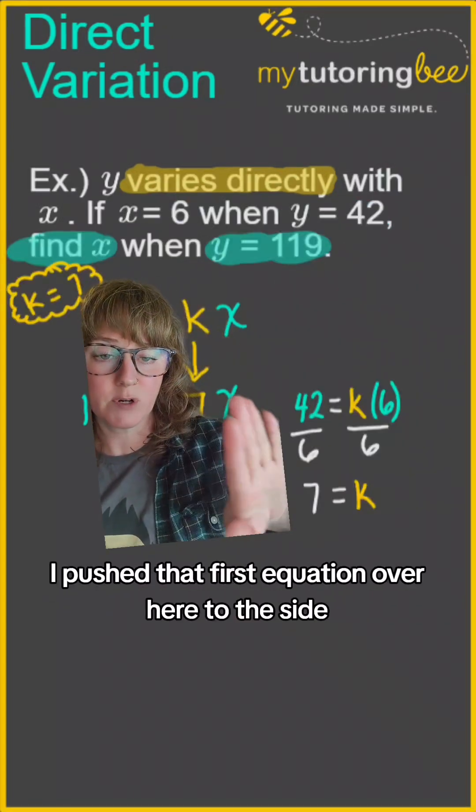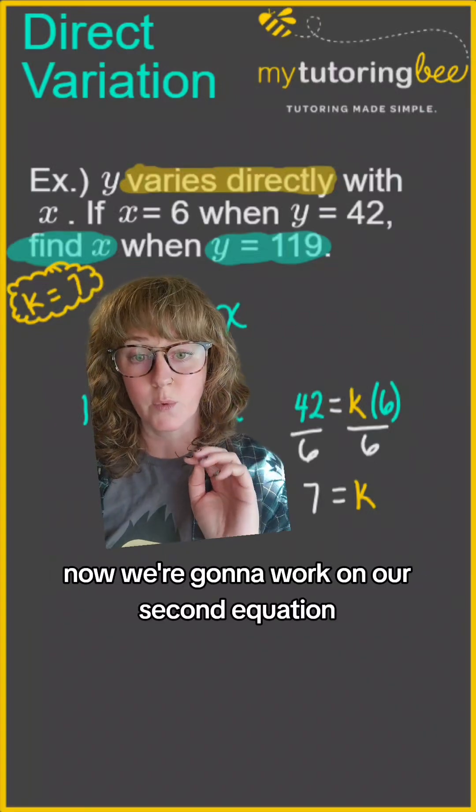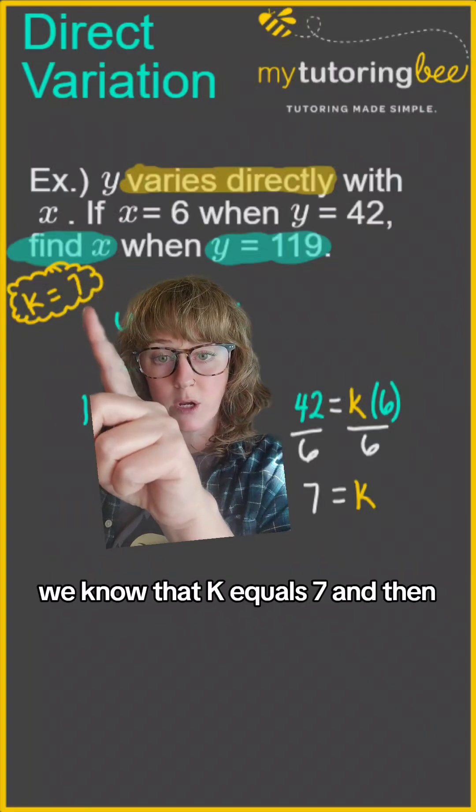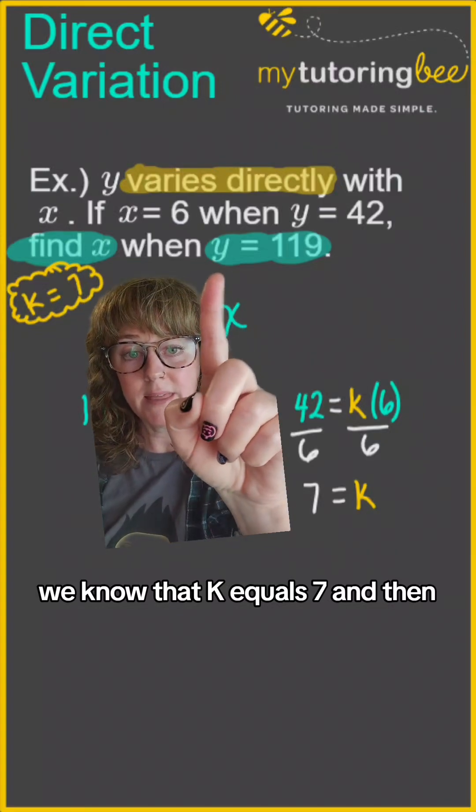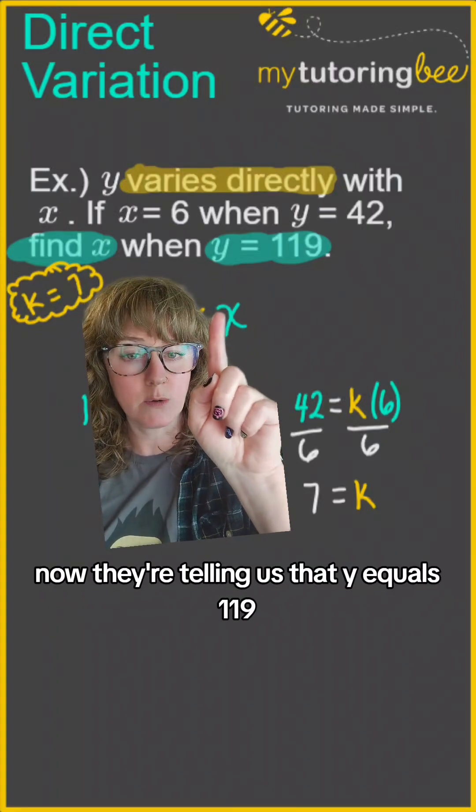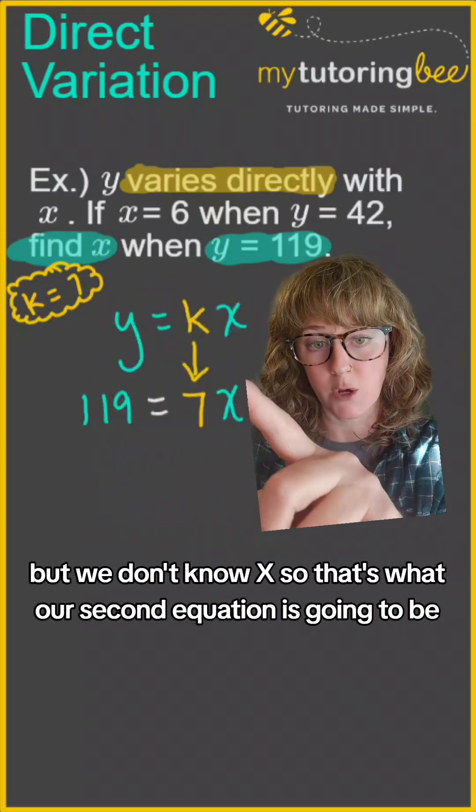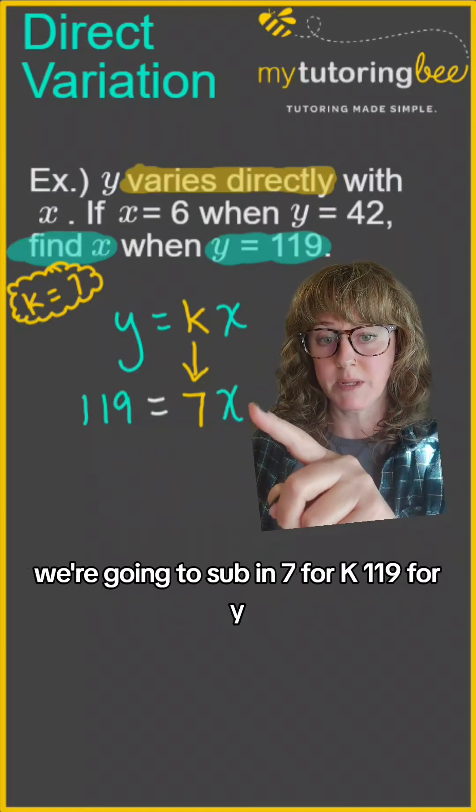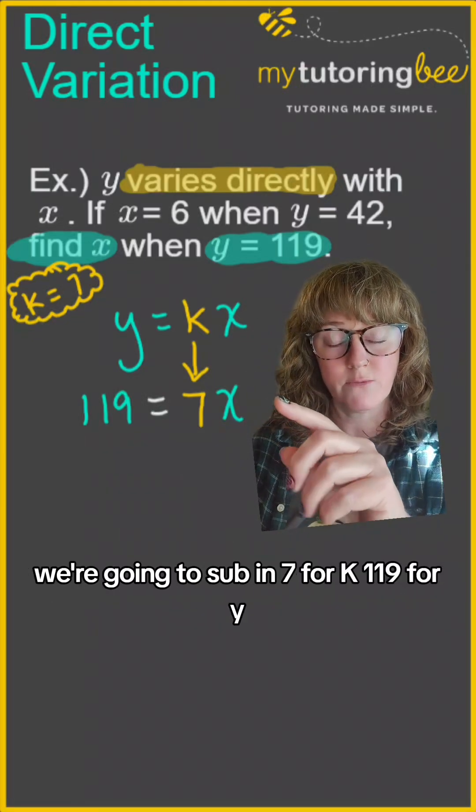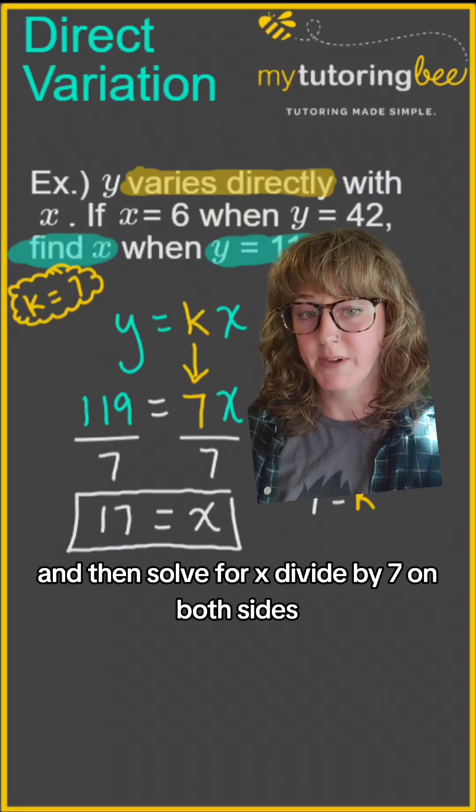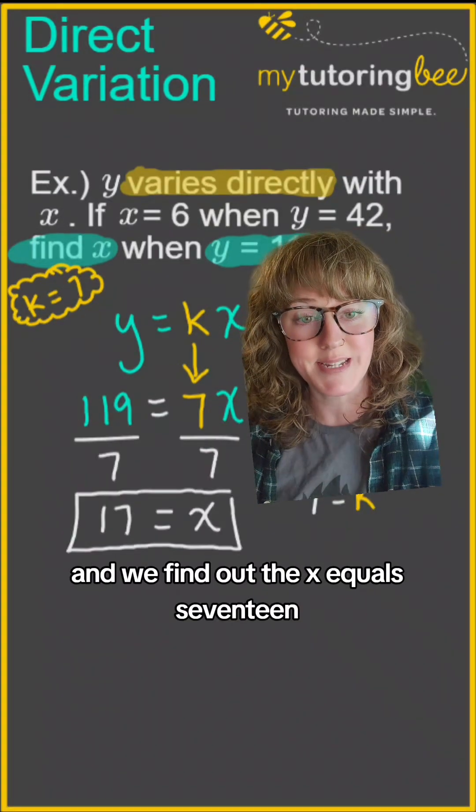I've pushed that first equation over here to the side. Now we're going to work on our second equation. We know that K equals 7, and then now they're telling us that Y equals 119, but we don't know X. So that's what our second equation is going to be. We're going to sub in 7 for K, 119 for Y, and then solve for X. Divide by 7 on both sides, and we find out that X equals 17.